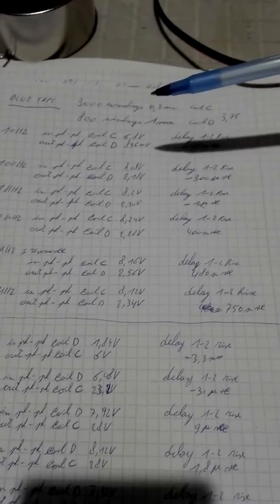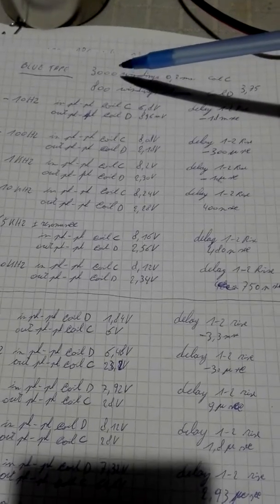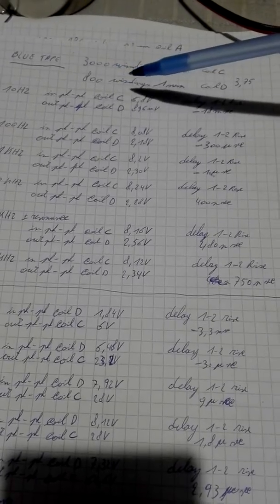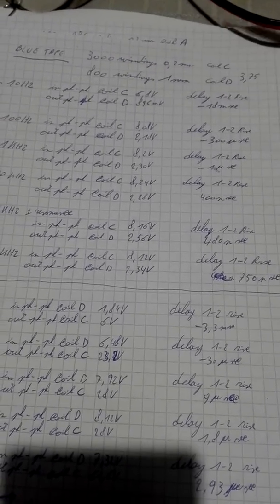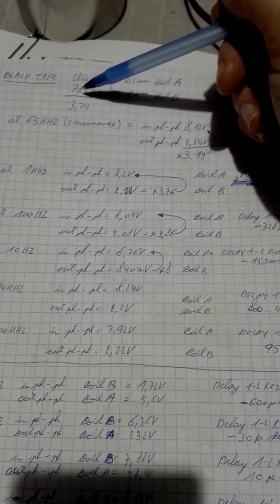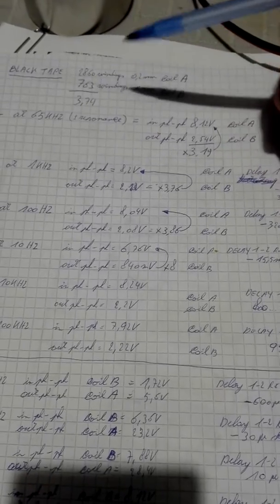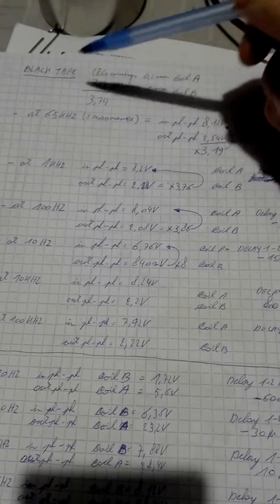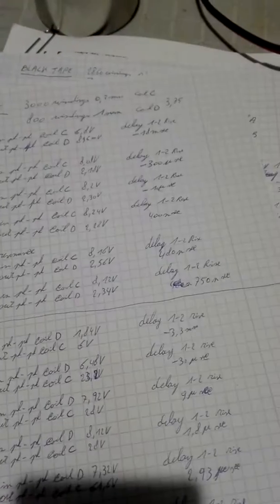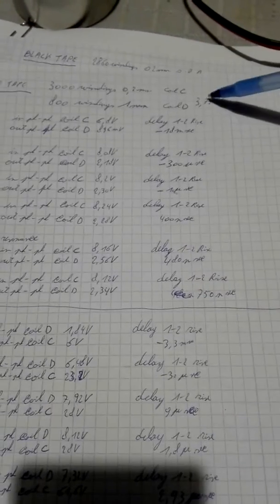We'll go more when I show you the measurements. So now we have 3000 windings of the 0.2 millimeter wire and 800 windings of the one millimeter wire, instead of in the first coil I had 2860 windings and 763 for the secondary. This gives a relation of 3.74 and now we have a relationship of 3.75.